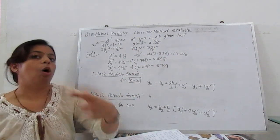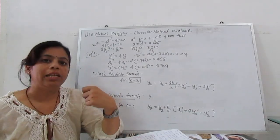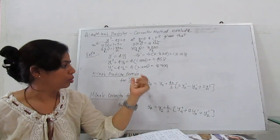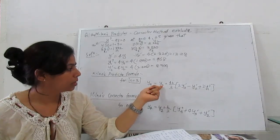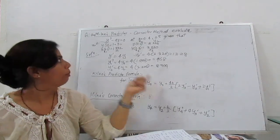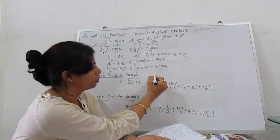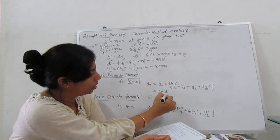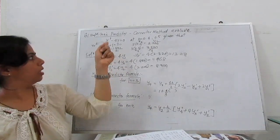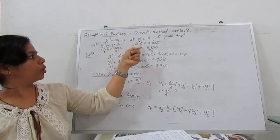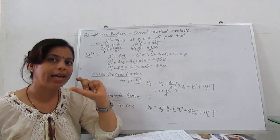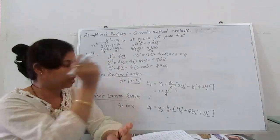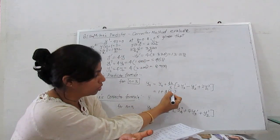Now we have all the values which we need to substitute in our Milne predictor formula when n = 3. So to calculate the next value, first is y₀. My y₀ is 1, so I will substitute here 1 + (4/3). What is our h? The difference between the value of x at equidistant points is 0.1.